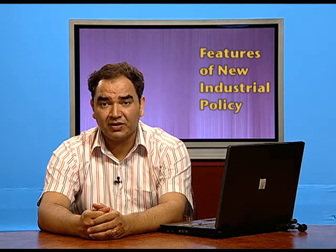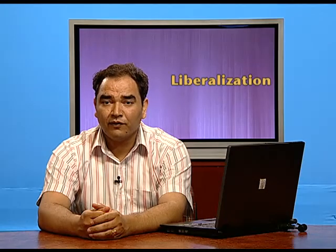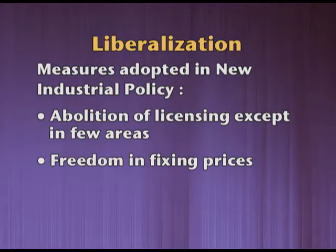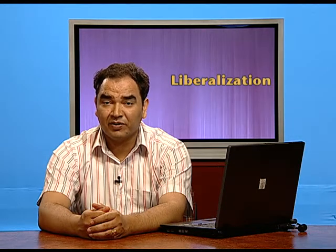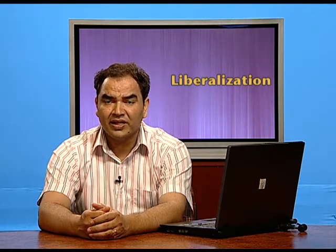After discussing the features of the new industrial policy, you must have understood that more emphasis was given on liberalization, privatization, and globalization. Liberalization refers to giving more liberty to business organizations by removing unnecessary restrictions in the form of licensing, quota, fixing prices, etc. In the new industrial policy, the following measures were adopted: abolition of licensing except in a few areas — six areas were left out from de-licensing. The second measure was freedom in fixing prices — companies were now given the liberty to fix prices of their products based on demand and supply forces.